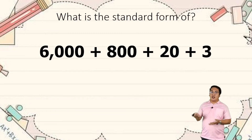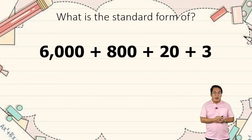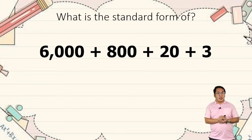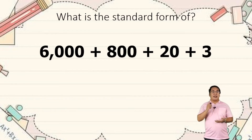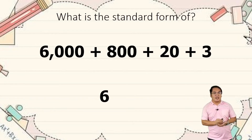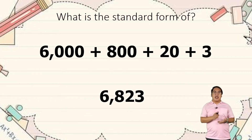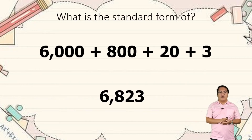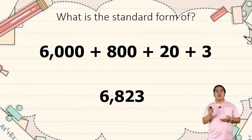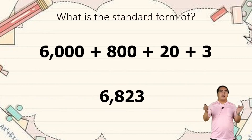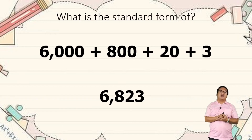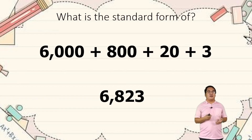Do you think there's a standard form? Yes, there is. So this one is 6,823. The standard form is combining numbers just like in the addition process.